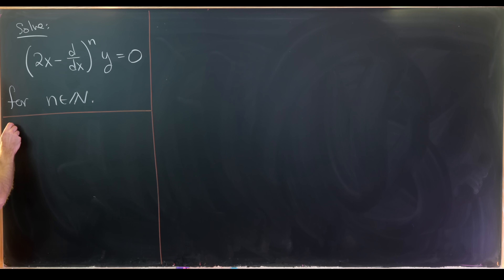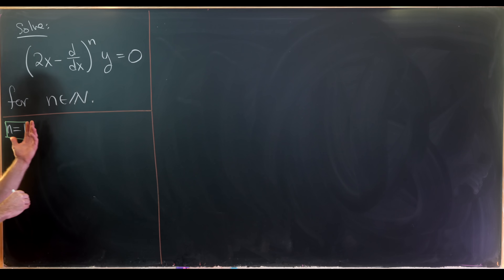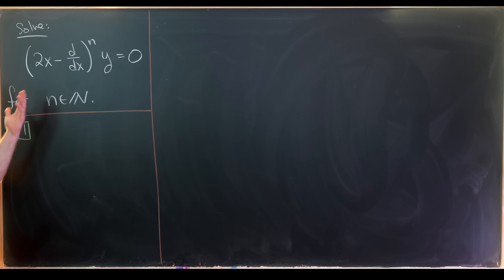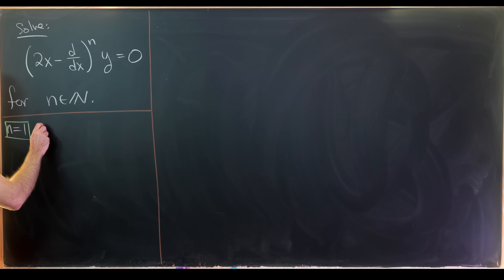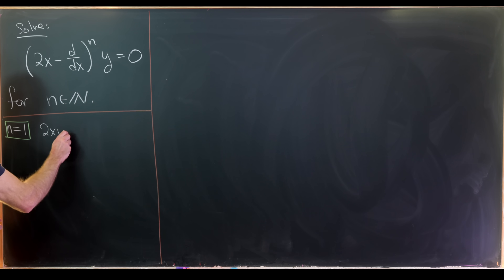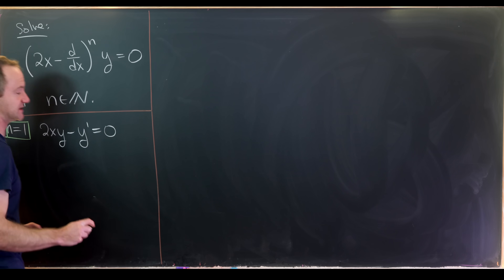Let's start with the n equals 1 case. You could do the n equals 0 case if you agree that the natural numbers include 0, but that case is pretty easy — you just get y equals 0. The n equals 1 case turns into 2xy minus y prime equals 0.